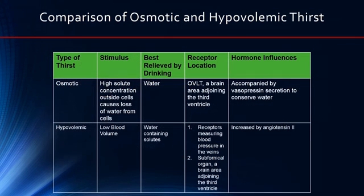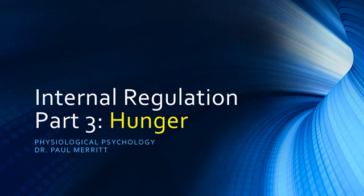To compare osmotic and hypovolemic thirst: osmotic thirst is triggered by high solute concentration outside the cells, causing loss of water from cells, whereas hypovolemic thirst is triggered by low blood volume. Both are best relieved by drinking water or water containing solutes. Their receptors are contained in different locations and are associated with two different hormonal influences. Next time, we'll pick up on internal regulation and talk about hunger.